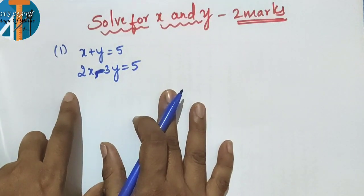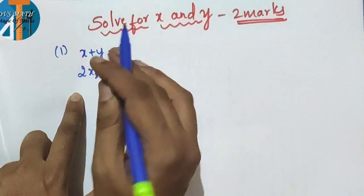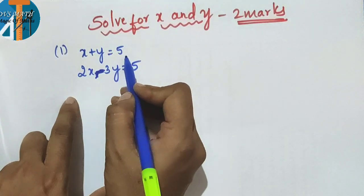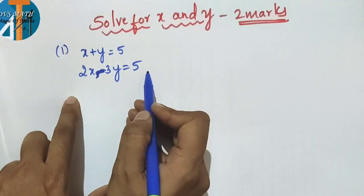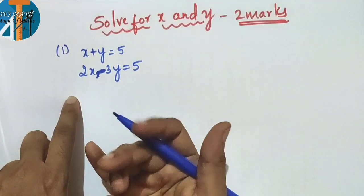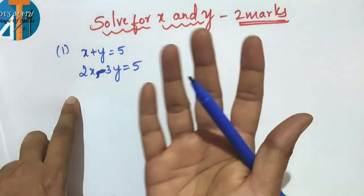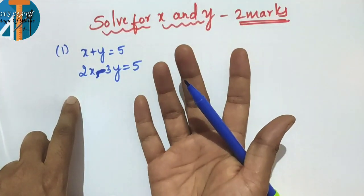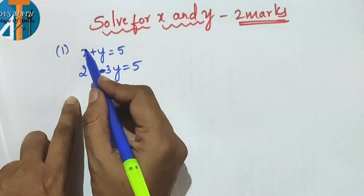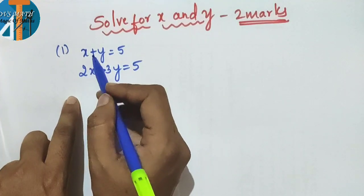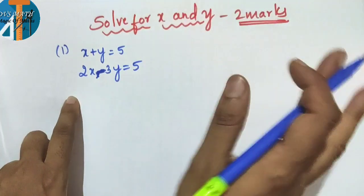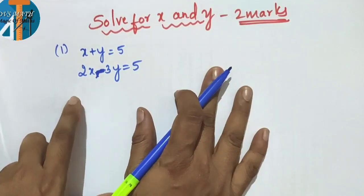First step: the linear equations are x plus y is equal to 5, and 2x minus 3y is equal to 5. Observe the coefficients of x and y — the coefficients are 1x, 2x, 1y, and 3y respectively.